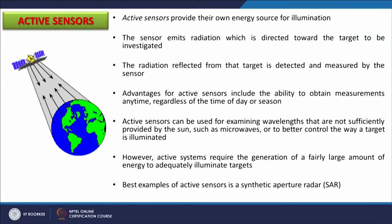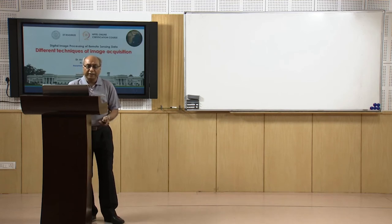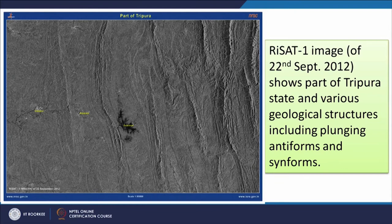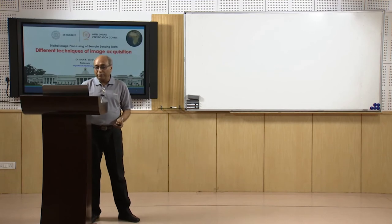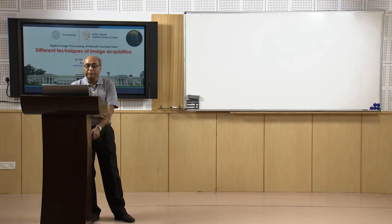The best example of an active sensor is synthetic aperture radar (SAR). Sentinel and other satellites carry SAR. One example from Indian remote sensing is RISAT-1, launched on 22 September 2000, showing a part of Tiruppur with hill ranges and water bodies. This part of the country is most of the time under cloud cover, but microwave or active remote sensing satellites are unaffected by clouds, providing completely cloud-free images.